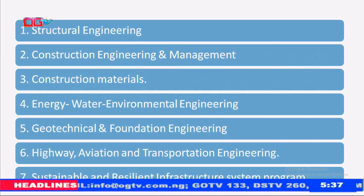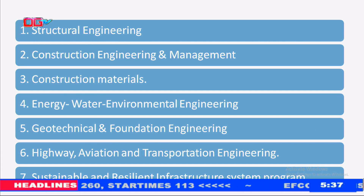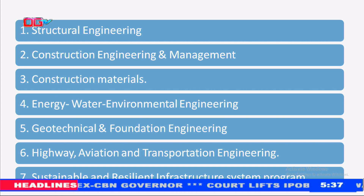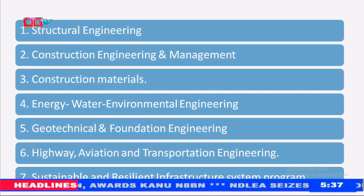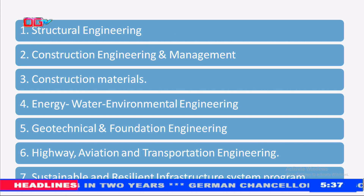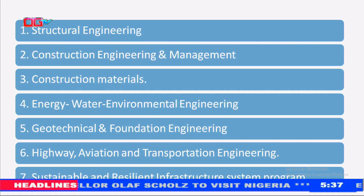Civil engineering has been broken down into seven major parts. First, structural engineering. Second, construction engineering and management, or project management. Third, construction materials. Fourth, energy, water, and environmental engineering. Fifth, geotechnical and foundation engineering. Sixth, highway, aviation, and transportation engineering. And the last one, sustainable and resilience infrastructure system programming — that is the use of computer programming in civil engineering structures.